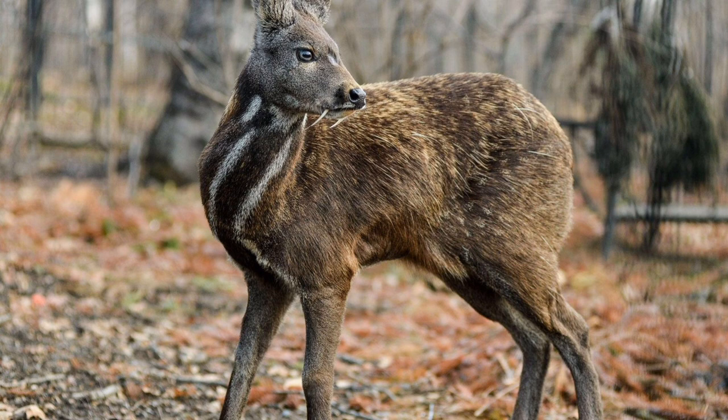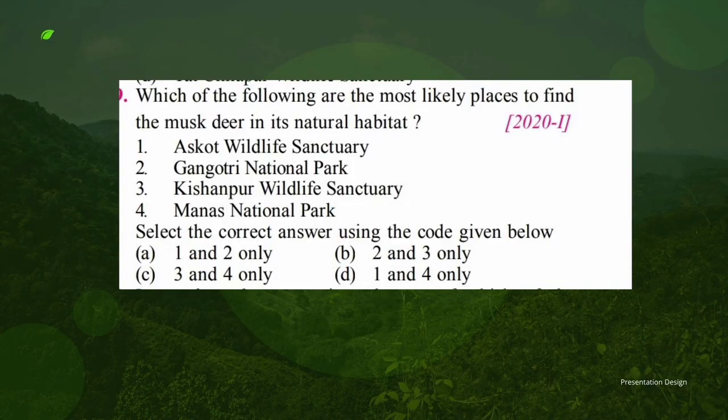Now let's see the questions quickly. Question 1: Which of the following are the most likely places to find the musk deer in its natural habitat? Options: Askot Wildlife Sanctuary, Gangotri National Park, Kishanpur Wildlife Sanctuary, Manas National Park. The answer is one and two — Askot and Gangotri are in Uttarakhand in the Himalayan region. Kishanpur and Manas are in Assam.